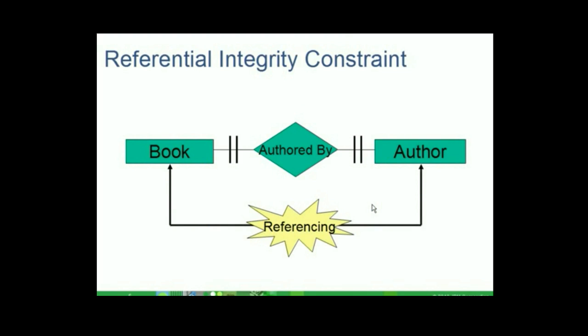Referential integrity constraint defines relationships between tables and ensures that these relationships remain valid. As mentioned at the beginning of this presentation, for a book to exist it has to be written by an author; otherwise, there is no meaning for a book to exist all by itself. Triggers in relational databases help implement this referential integrity constraint.